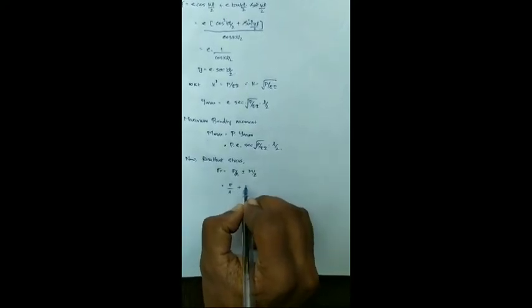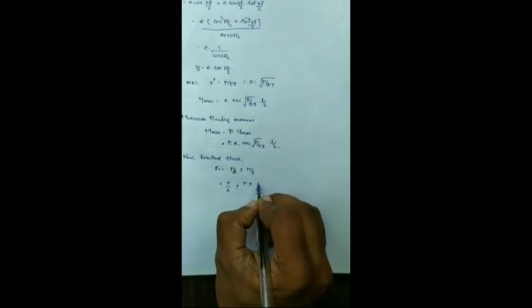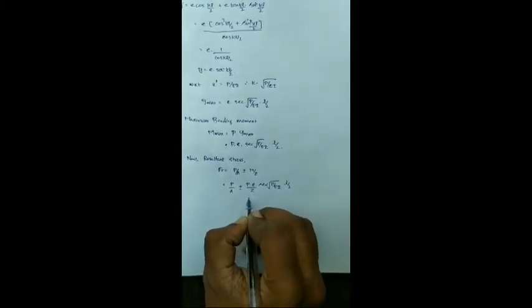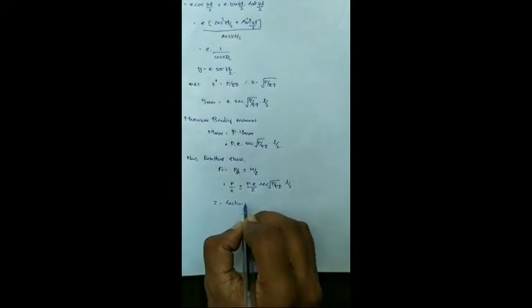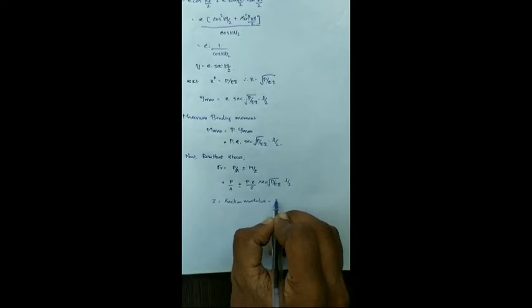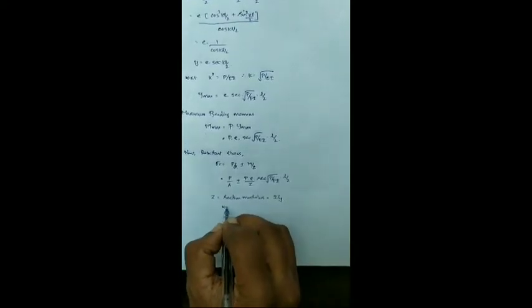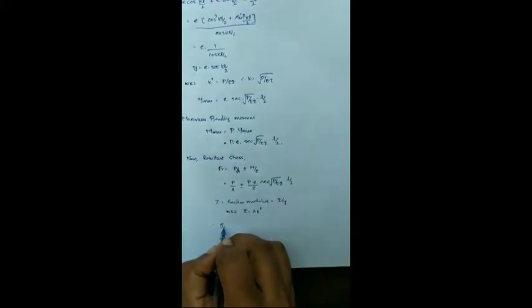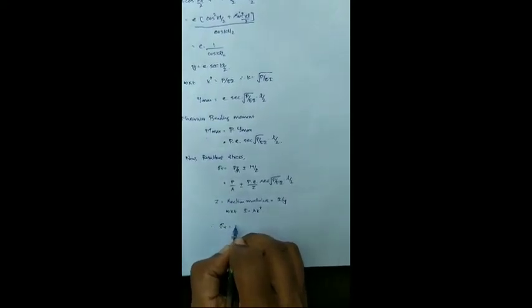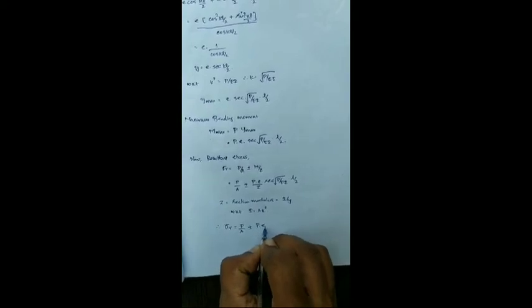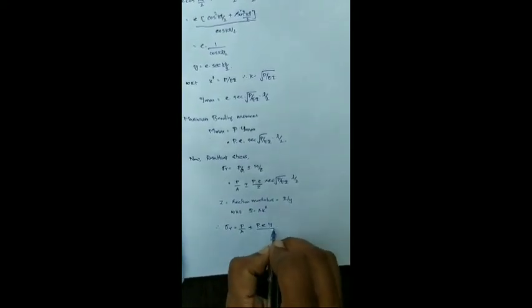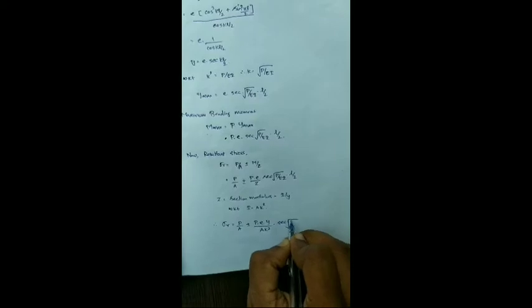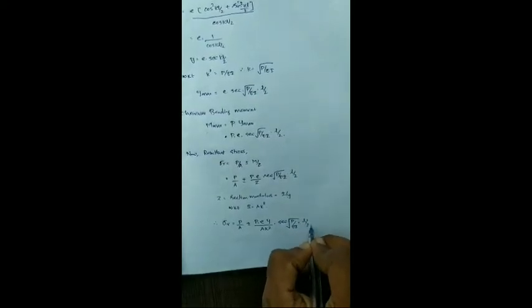So this bending stress, you substitute the maximum bending moment value which is nothing but P into e into secant root P by EI times L by 2, and this z is called section modulus which is given by the formula i by y. And again we know i is equal to a k square.